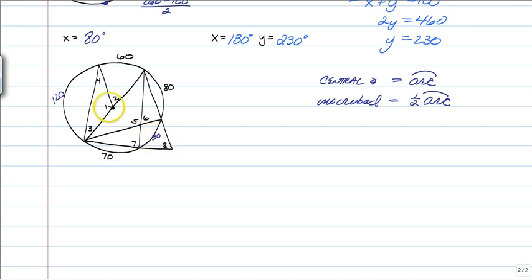Angle 1 is a central angle. So angle 1 is going to be equal to the arc. So it's 120. Angle 2 is also a central angle. So it's equal to the arc. Now angle 3 is going to switch. Angle 3 is now on the circle.